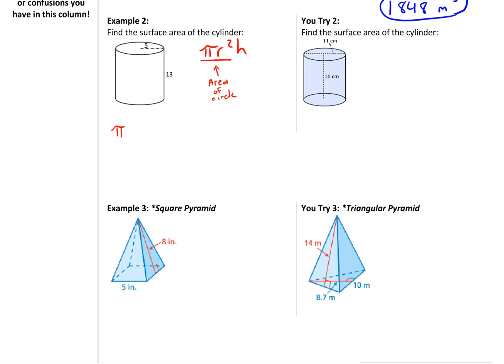So pi times 5 squared, because if you look here, our radius is 5, times the height of 13. That's 3.14 times 5 squared is 25, times 13, which gives us a volume of 1020.5. And I don't have units here, so we'll just write units cubed. Pause and try, you try 2.